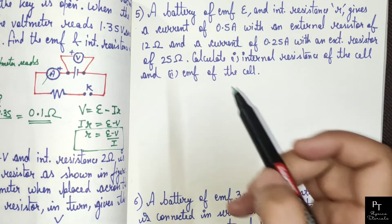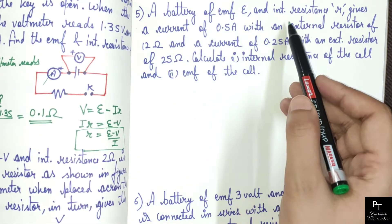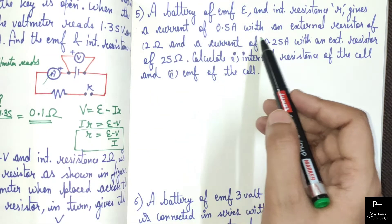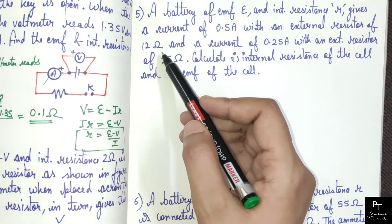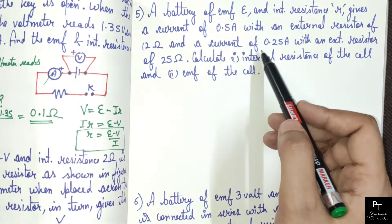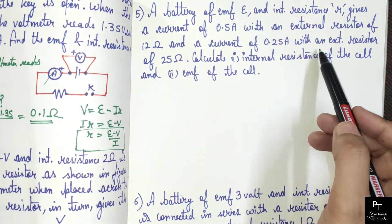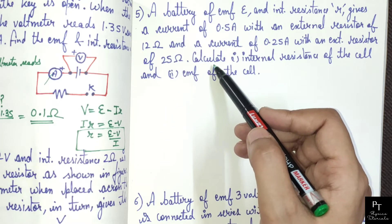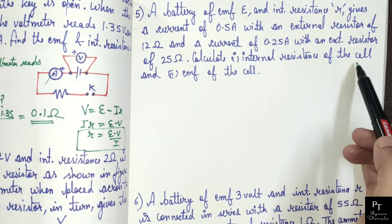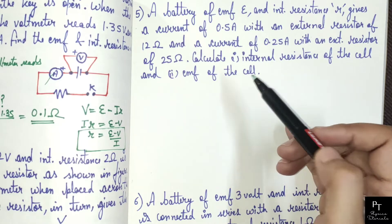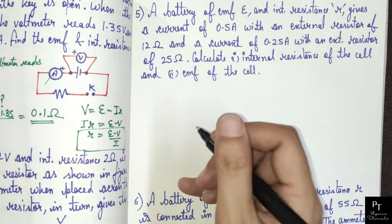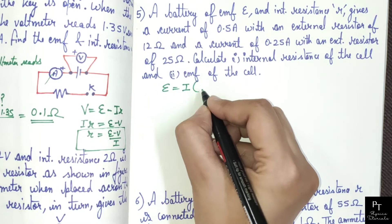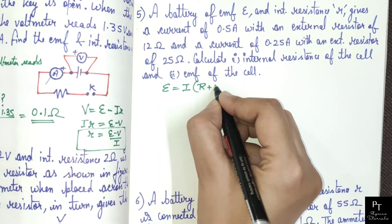Now the fifth problem: a battery of EMF E and internal resistance r gives a current of 0.5 ampere with an external resistor of 12 ohm, and a current of 0.25 ampere with an external resistor of 25 ohm. We have to calculate the internal resistance of the cell and the EMF of the cell. We know that EMF equals current into (external resistance plus internal resistance).